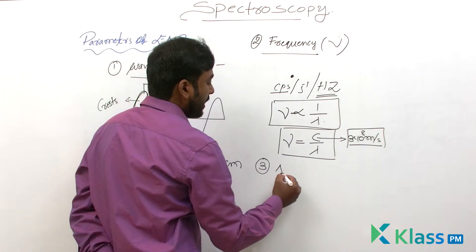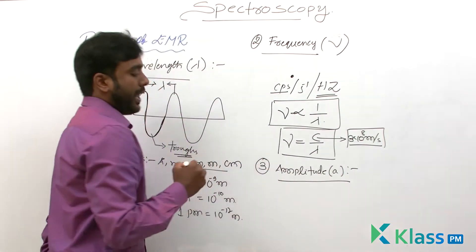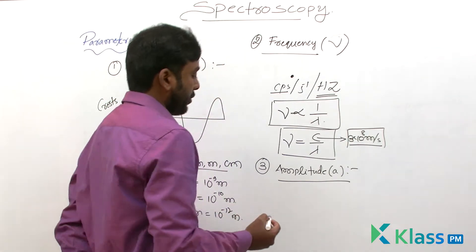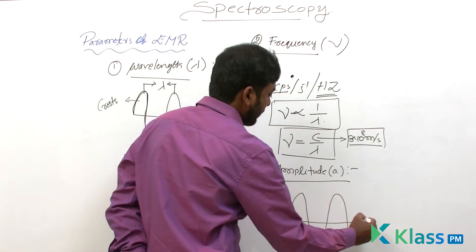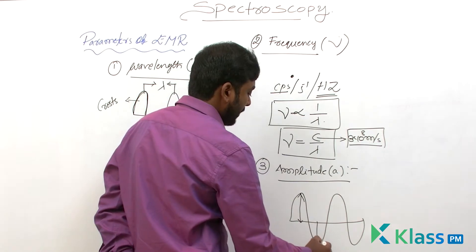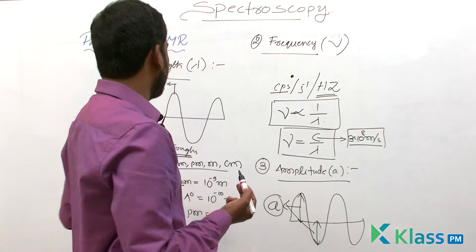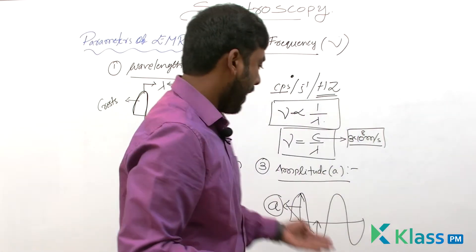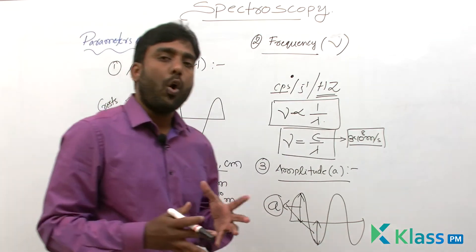The third parameter is amplitude. Amplitude is the height of a crest or the depth of a trough in a wave. The same units used for wavelength are also used for amplitude.